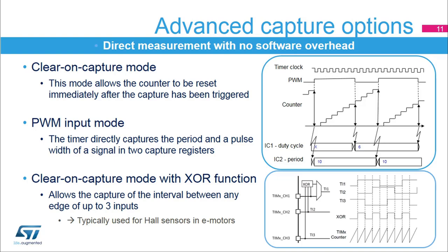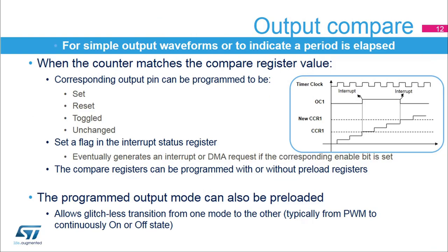The duty cycle then simply corresponds to the ratio between input capture 1 and input capture 2. Lastly, the timer includes an XOR function to combine the three input channels with XOR logic. This is typically used to handle the three 120-degree phase-shifted signals coming from the hall sensors in electrical motors. This allows a clear-on capture happening on each and every edge of the three signals and a capture value directly usable for speed regulation.